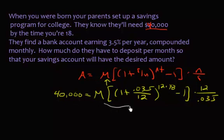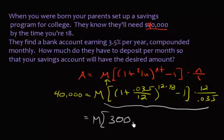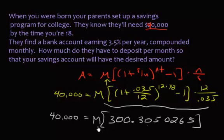First thing we're going to do is simplify this right-hand side. Plug that into your calculator and you're going to get M times a long number, not super big but 300.305 and so on. Write out as many decimals as you can. On the left-hand side it's still $40,000.